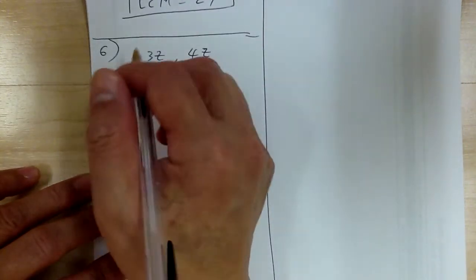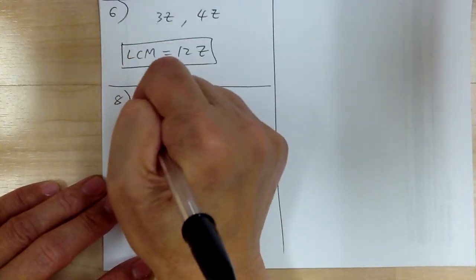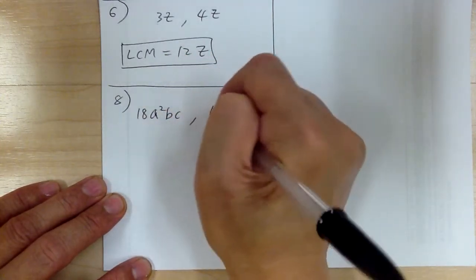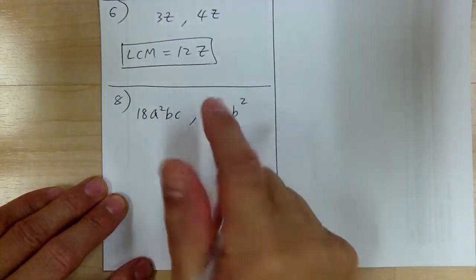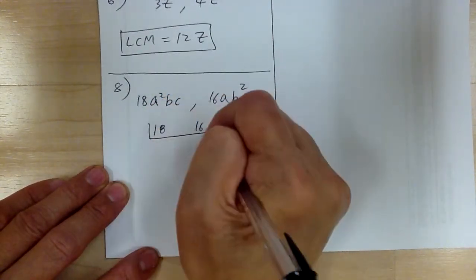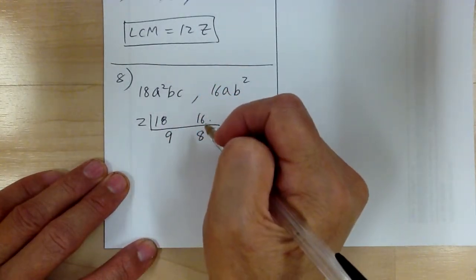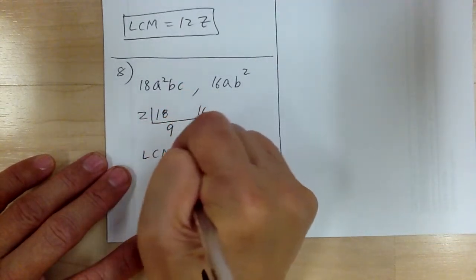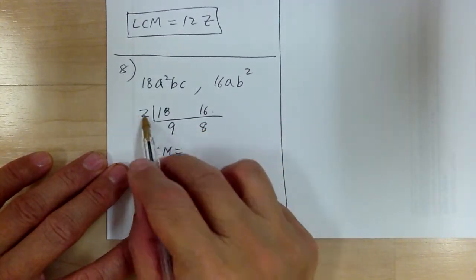Let's go to 8. You've got 18a squared bc and 16ab squared. So what you want to do is first focus on the number. You've got 18 and 16; both are divisible by 2. So divided by 2, you're going to get 9 and 8, and that's as far as you can go. So your LCM — this kind of multiple — you multiply all these together: 8 times 9 is 72, times 2 will give you 144.